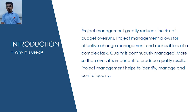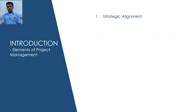It is important to reduce quality risks. Project management helps to identify, manage and control quality. So the elements of project management — the first is strategic alignment. Project management is important because it ensures what is being delivered is right and delivers real value against the business opportunity.